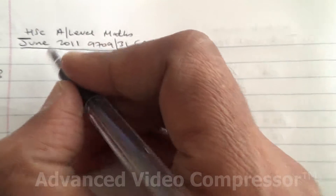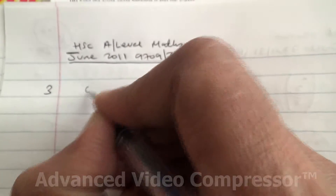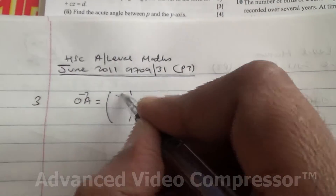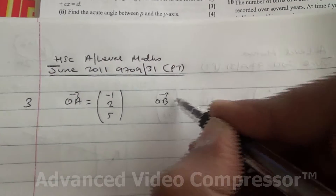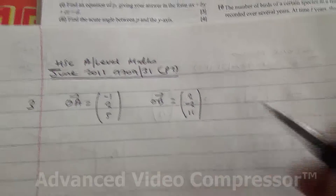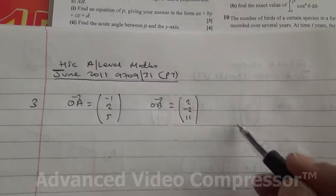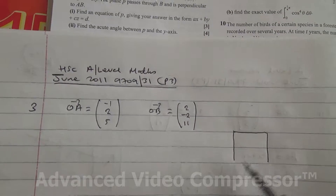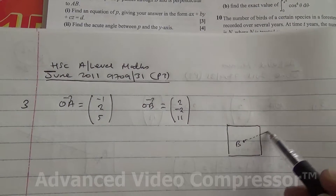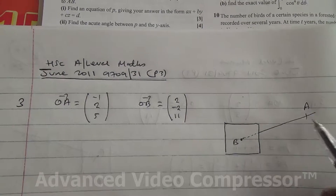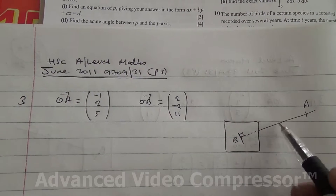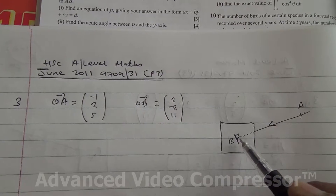So we have the vector OA equal to minus 1, 2, 5, and OB equal to 2, minus 2, 11. We've got a plane, and point B is in the plane because the plane passes through point B and is perpendicular to the line AB. So if it is perpendicular, we can find the equation of the vector line AB.